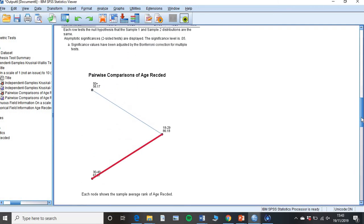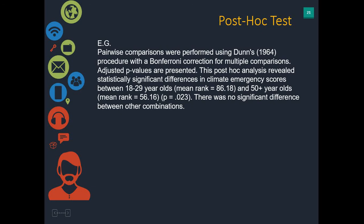So we'll show you how to write that up. Under your Kruskal-Wallis H test result, you would write: 'A pairwise comparison was performed using Dunn's 1964 procedure with a Bonferroni correction for multiple comparisons. Adjusted p-values are presented. The post hoc analysis revealed a statistically significant difference in climate emergency scores between 18 to 29 year olds (mean rank = 86.18) and over 50 year olds (mean rank = 56.17), with the adjusted p-value. There was no significant difference between the other combinations.' If there were multiple significant differences, you would list them all. That is how you run a Kruskal-Wallis H test with post hoc and Bonferroni correction.